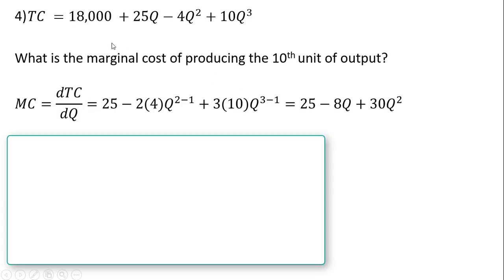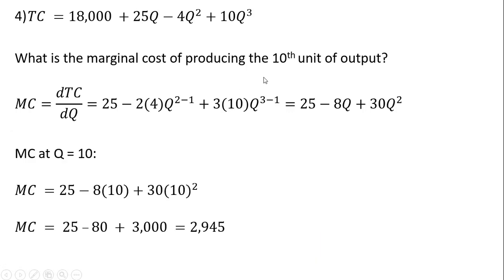Example 4: an even slightly more complicated total cost equation. We want to find the marginal cost of producing the tenth unit of output. The derivative of 18,000 is 0. The derivative of 25q is 25. The derivative of minus 4q squared gives minus 8q. And the derivative of the last term gives 30q squared. To find the marginal cost at the tenth unit, plug 10 in for q throughout the marginal cost equation, and we get $2,945 — so the marginal cost of the tenth unit is almost $3,000.